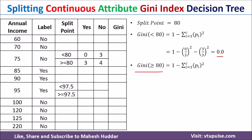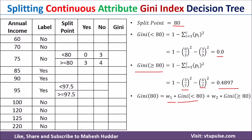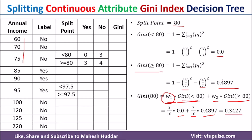Similarly, for greater than or equal to 80, there are 3 'yes' and 4 'no' out of 7, so the probabilities are 3/7 and 4/7. Solving gives a Gini of 0.4897. The overall Gini for split point 80 is w1 × Gini(<80) + w2 × Gini(≥80), where w1 = 3/10 and w2 = 7/10. This gives a combined Gini of 0.3427.